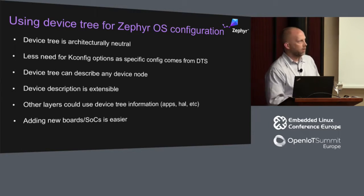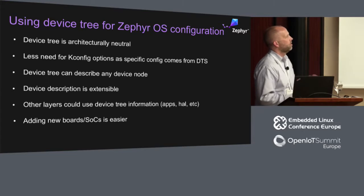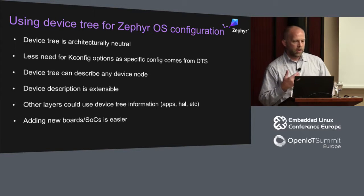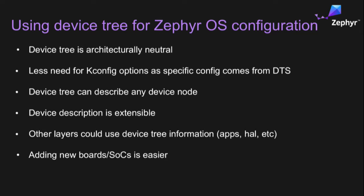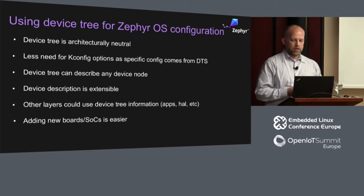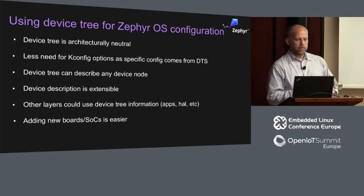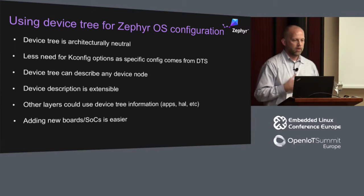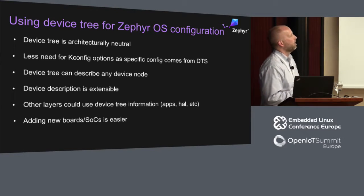How can we do things differently and make it a little bit easier to deal with? My thought is: let's see if we can use Device Tree for this. In the Linux kernel, Device Tree is used not only for configuration and saying what's on the board, but also during runtime. In our case, runtime can be a little difficult because we don't have a lot of space. But we can talk about how and why we'd want to use Device Tree for Zephyr.